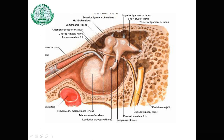In a section taken at the petromastoid part, the cavity is seen shaped like a pistol — the nozzle being the anterior part and the handle being the mastoid antrum posteriorly. Here one can see the anterior and posterior malleolar folds, the chorda tympani nerve crossing the handle of the malleus, the tensor tympani muscle inserting onto the handle of the malleus, the tympanic membrane with its pars tensa and pars flaccida.